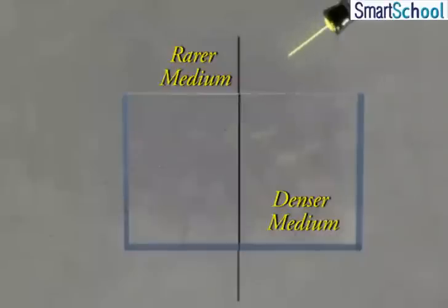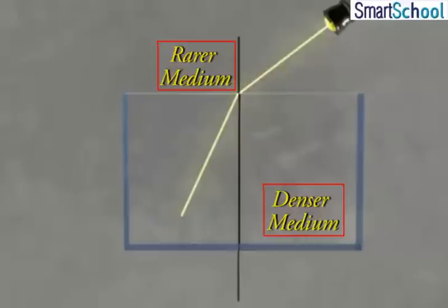The direction of the bending of light depends upon the optical density of the two media. In going from an optically rarer to a denser medium, the ray of light bends towards the normal.